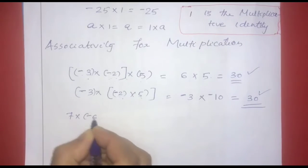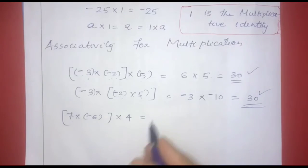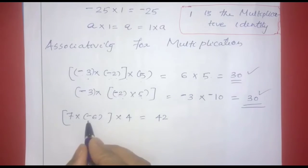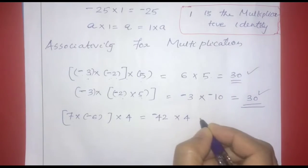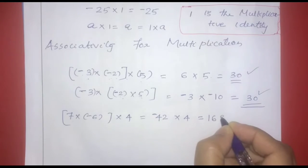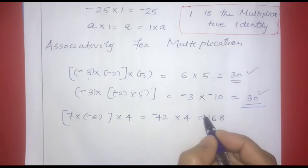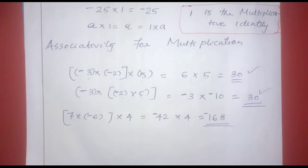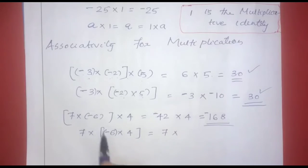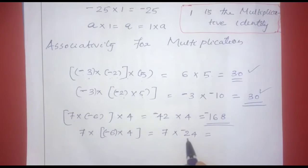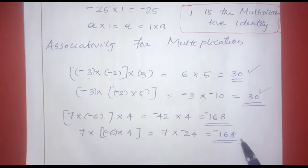Another example: 7 into negative 6 into 4. First, 7 into negative 6 gives negative 42 (opposite sign is negative). Then negative 42 into 4 gives negative 168. Changing the grouping: negative 6 into 4 is negative 24, then 7 into negative 24 also gives negative 168. Both orderings give the same answer.